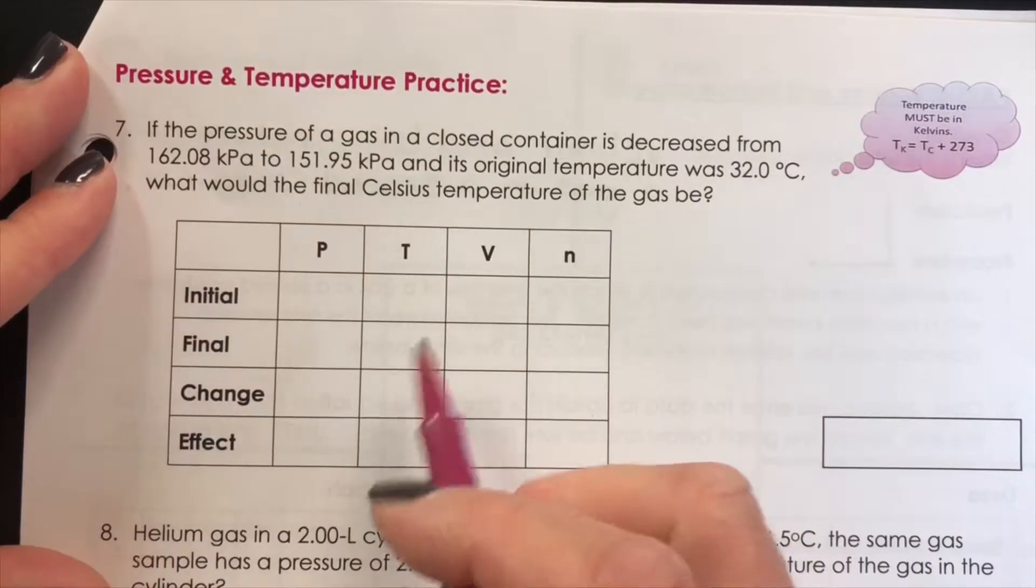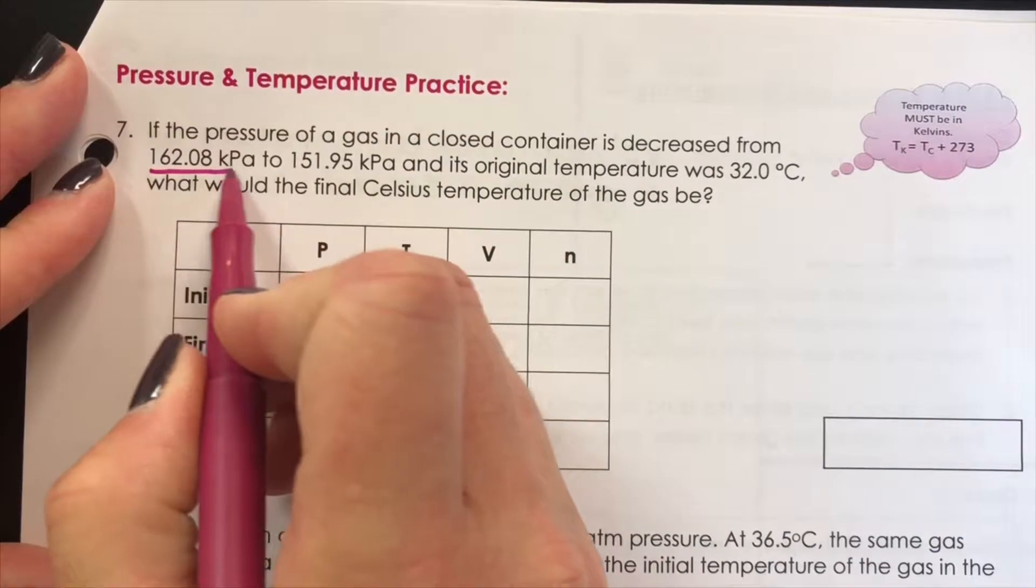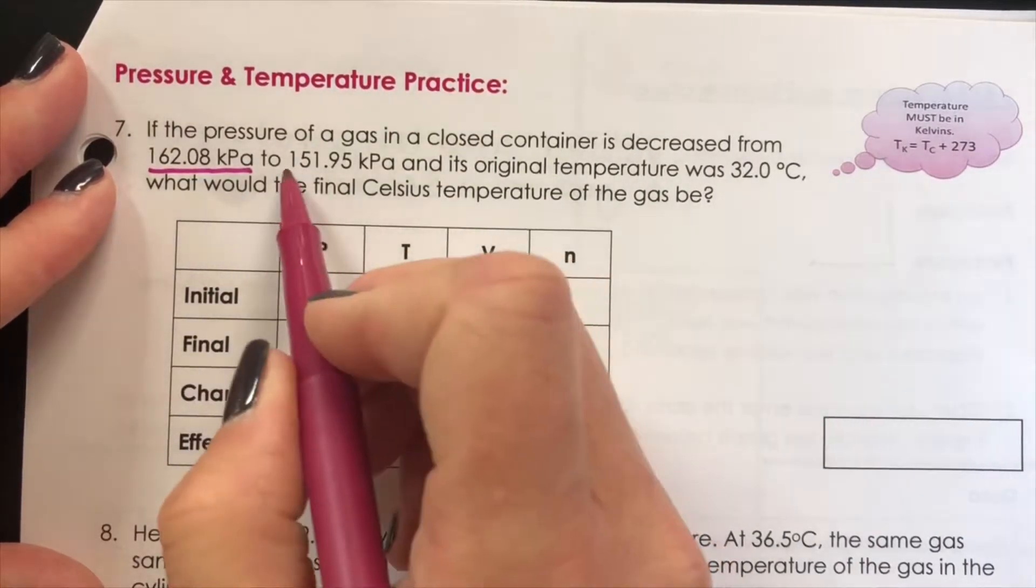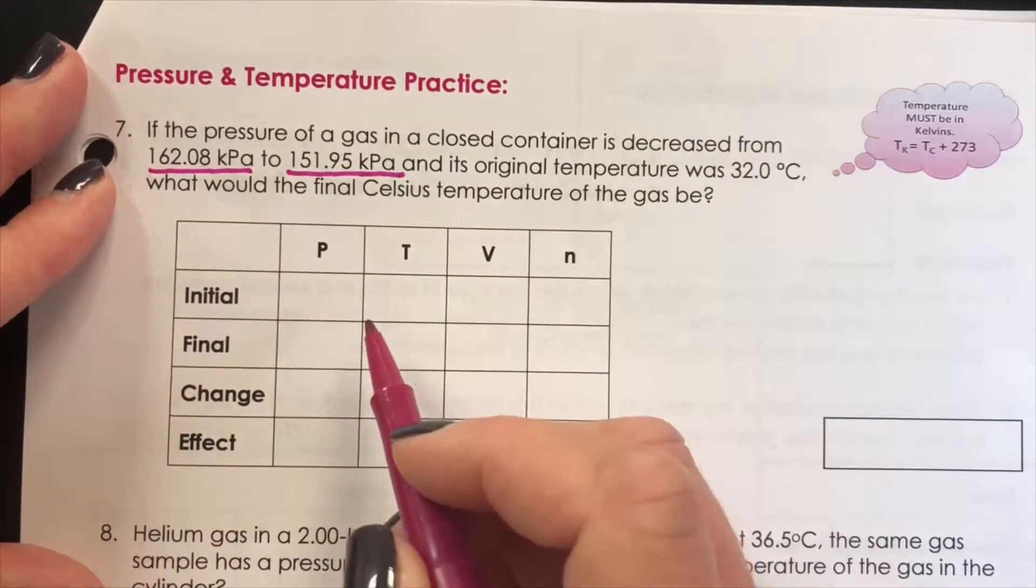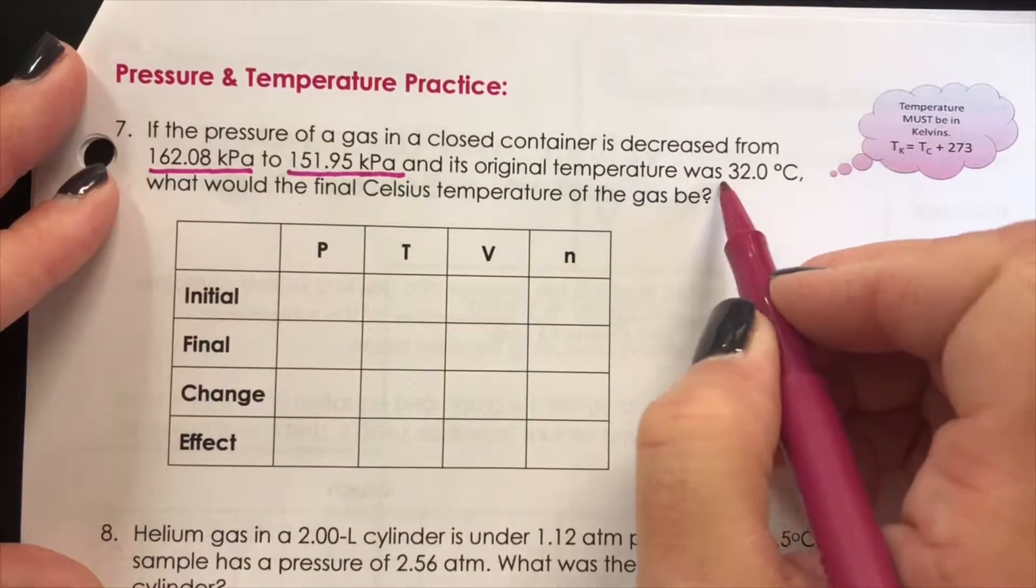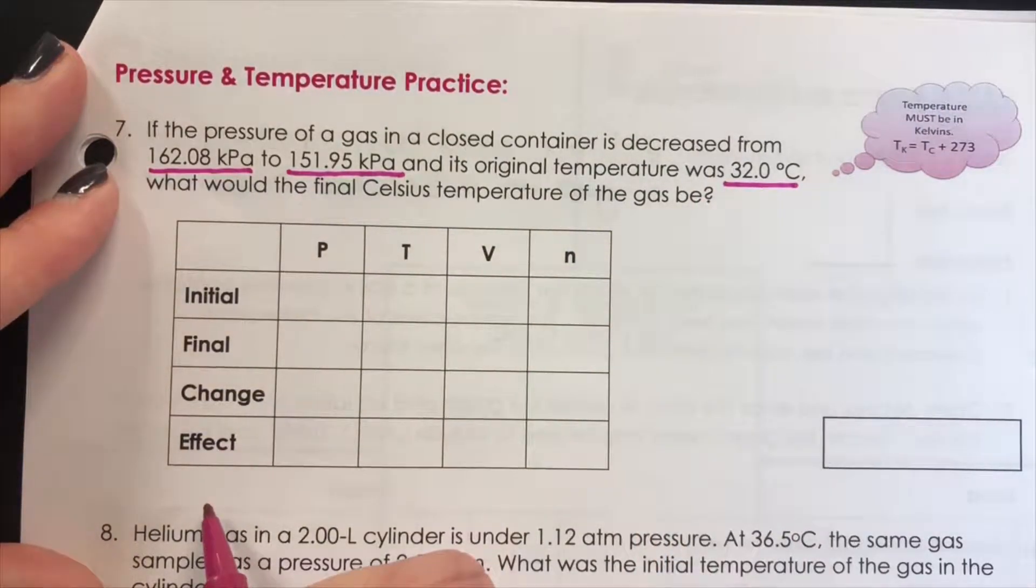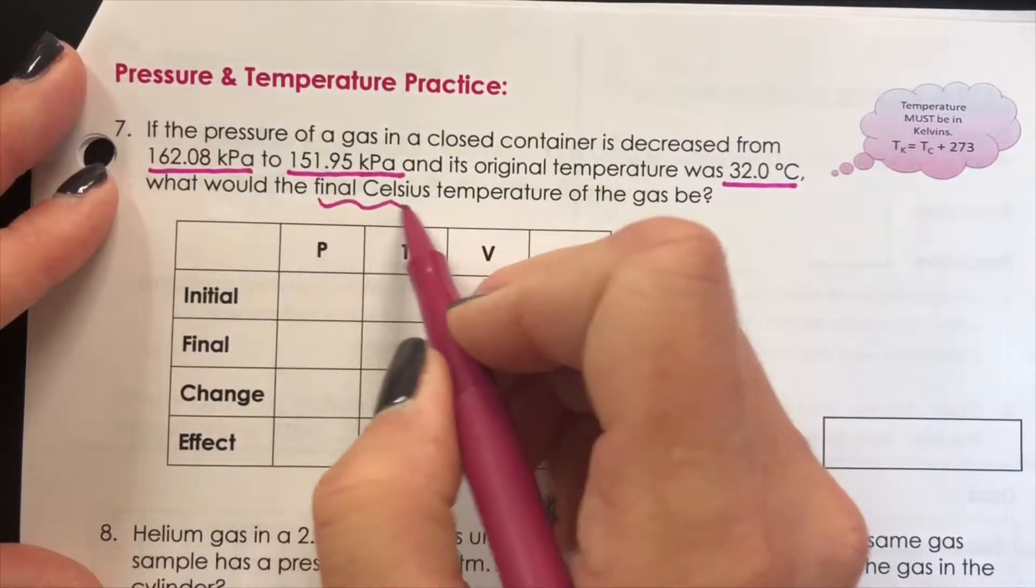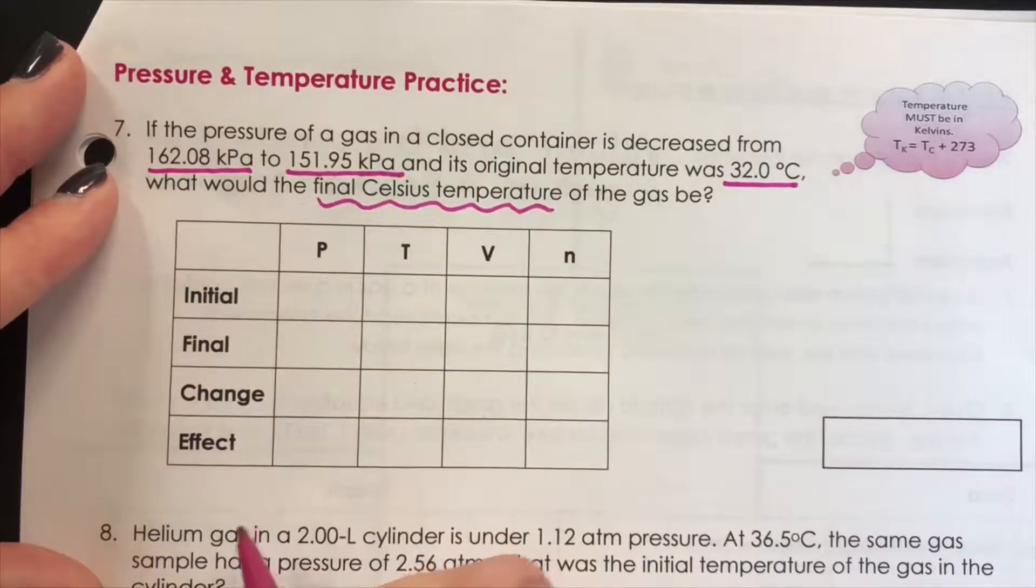If the pressure of a gas in a closed container is decreased from 162.08 kPa to 151.95 kPa and its original temperature was 32 degrees Celsius, what would the final Celsius temperature be?